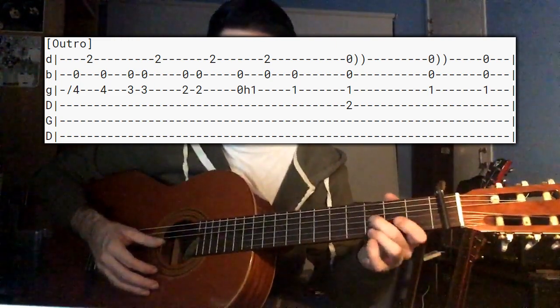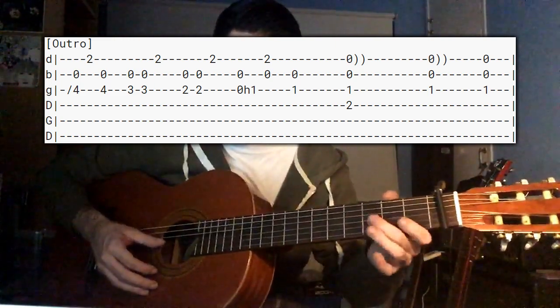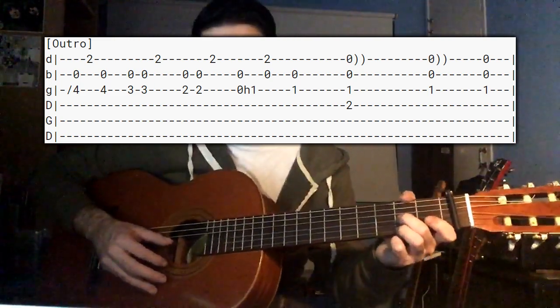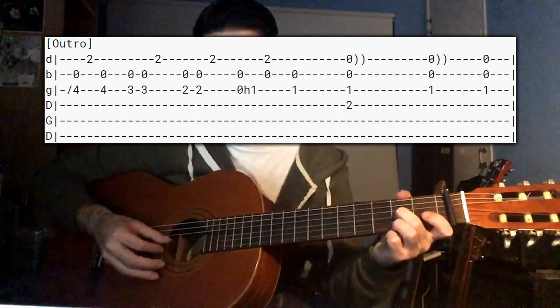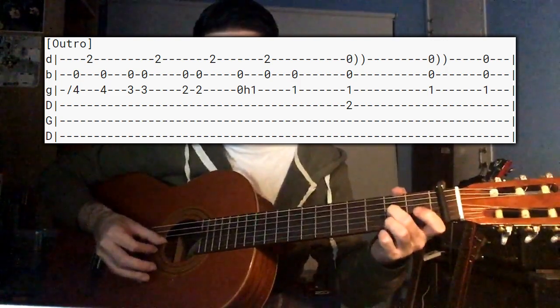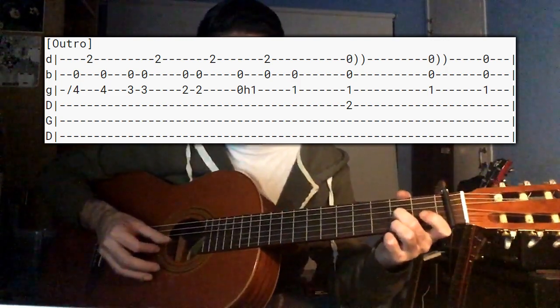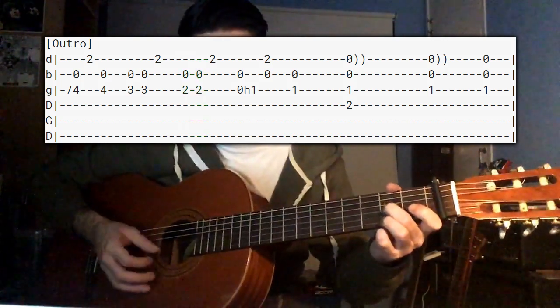Carrying on, descending line from the 4th to the 3rd, now to the 2nd. So 2nd fret 3rd string, open 2nd string, 2nd fret of the 1st string. And you do that same little sound as before. So 2nd fret, and then that one.